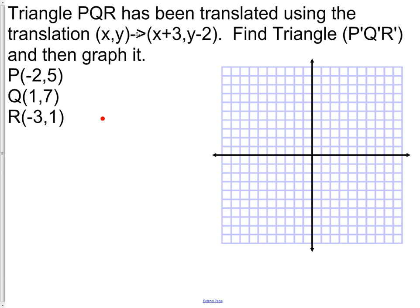Let's try one. Triangle PQR has been translated using the following translation: (x,y) to (x+3, y-2). Find triangle P'Q'R'. That is the notation that we use whenever a point is moved - every time a point is moved, we add an apostrophe. So if the point P was moved twice, the second time it was moved would actually have two little apostrophes there.